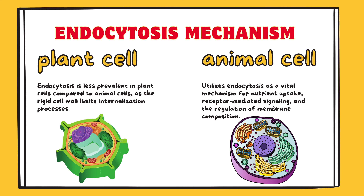Endocytosis mechanism. Plant cell: endocytosis is less prevalent in plant cells compared to animal cells, as the rigid cell wall limits internalization processes. Animal cell: utilizes endocytosis as a vital mechanism for nutrient uptake, receptor-mediated signaling, and the regulation of membrane composition.